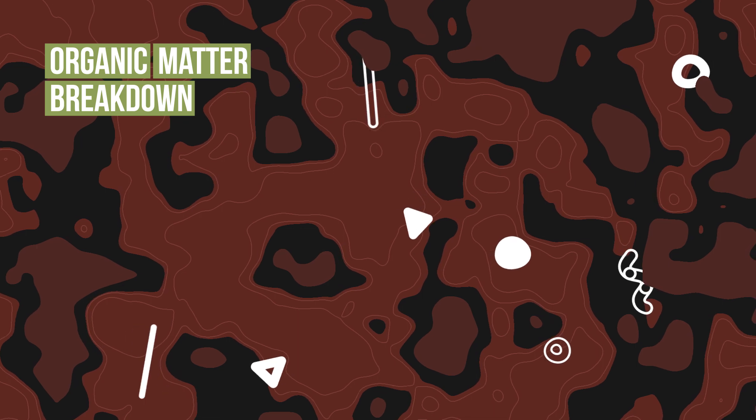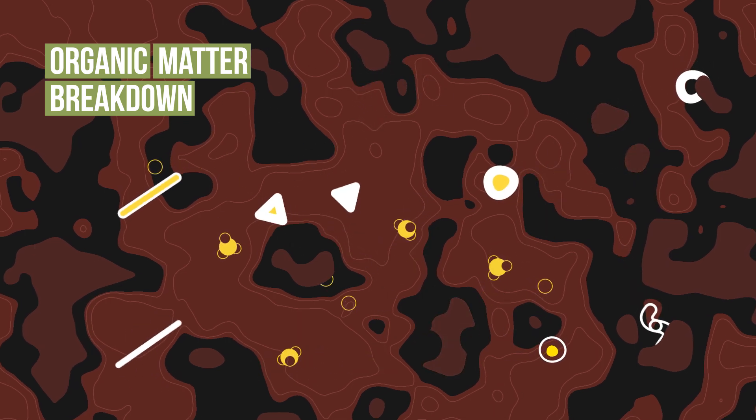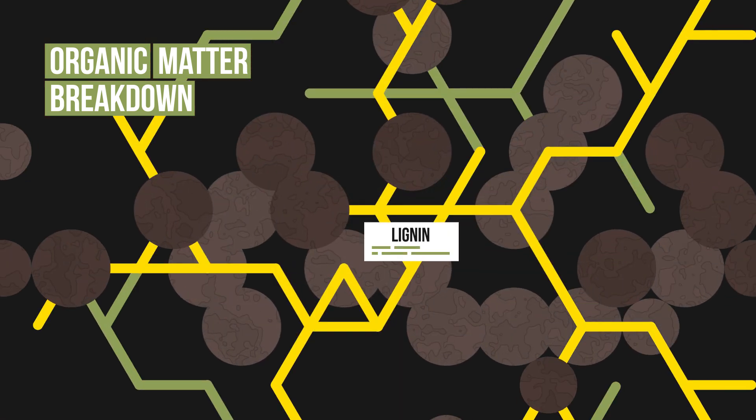Soil organisms play an essential role in the breakdown of organic matter. The rate of organic matter breakdown depends on its structure, such as the amount of lignin present.